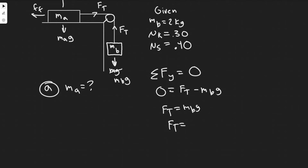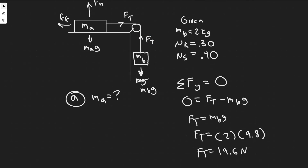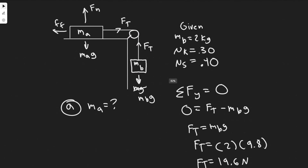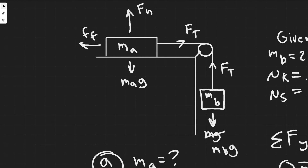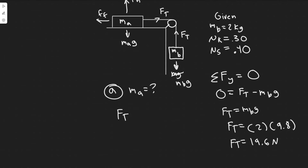FT equals MBG, which is 2 times 9.8, giving us 19.6 newtons. So we know the tension force needed for it not to move is 19.6 N. Now, if we want block A not to move, FT must equal the force of friction, because if FT were greater, it would move. Taking the sum of forces in the X direction equal to zero: 0 = FT − FF, which confirms FT must equal FF. So we need 19.6 N to equal the force of friction.